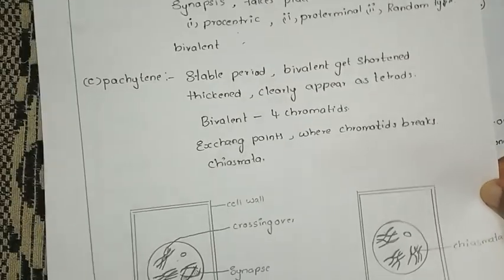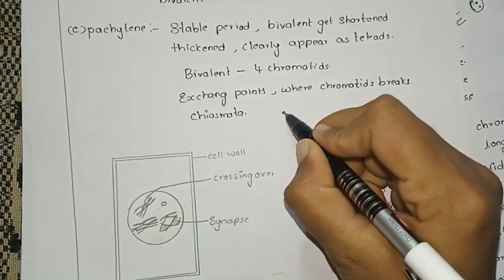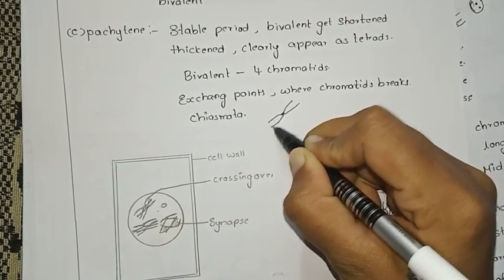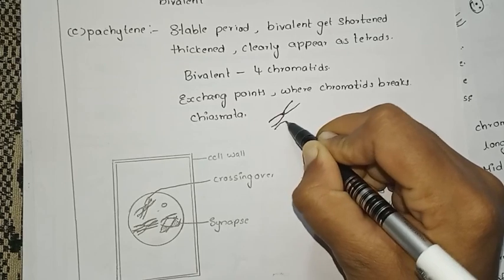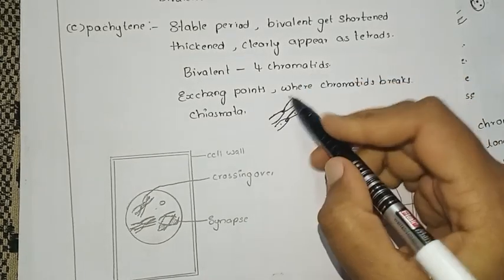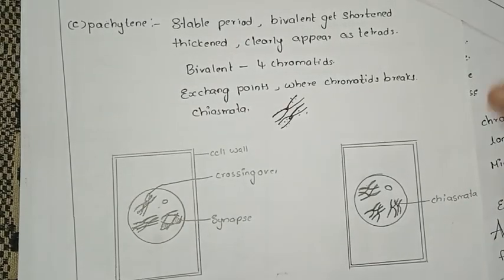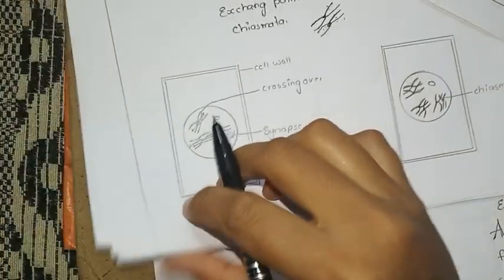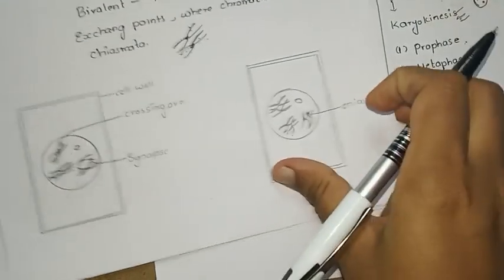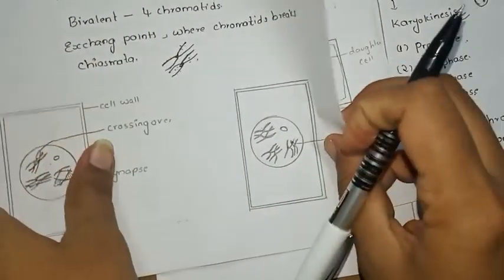The next stage is Pachytene — this is a stable period. The chromosomes form chromatids. Each chromosome forms two chromatids. The bivalent forms two homologous chromosomes, giving four chromatids per bivalent. One bivalent forms four chromatids, and the tetrads form eight chromatids total. This is the first time genes are combined and recombination occurs.